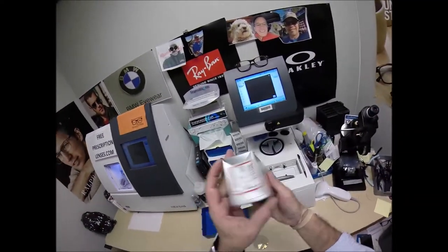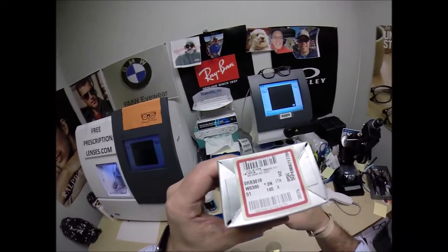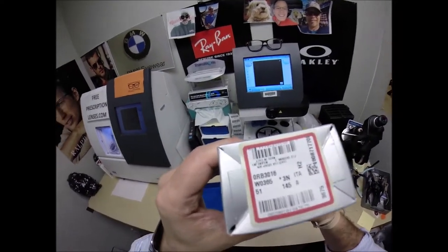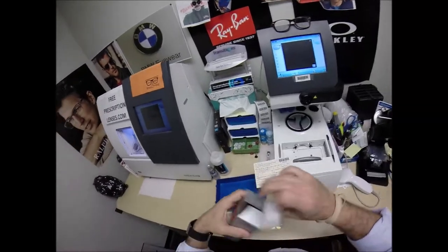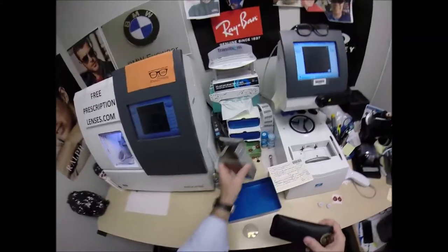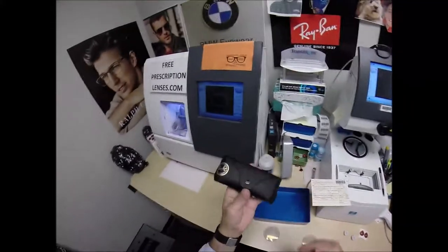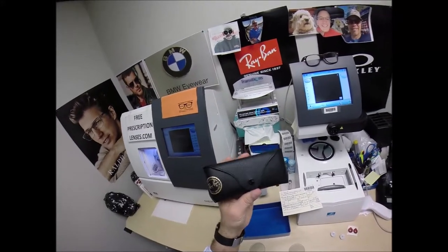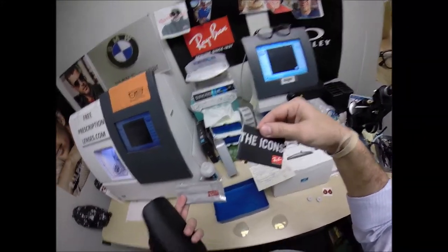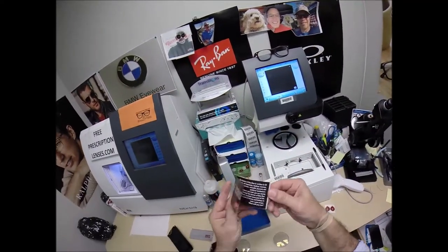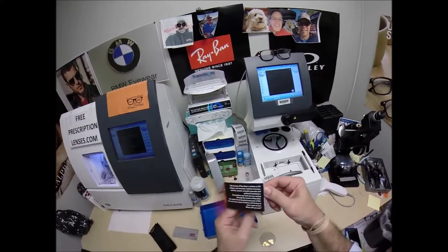Let's go ahead and take everything out of the box again. The Ray-Ban 3016 Clubmaster color W0365 in the 51 eye size. Take everything out of the packaging as Ray-Ban sends it to me. Your Italian leather Ray-Ban case.